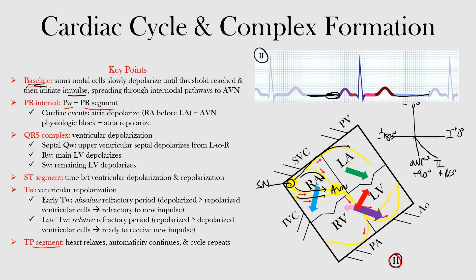Next, we come to the PR interval. Remember, the PR interval includes the P wave and the PR segment. The P wave represents atrial depolarization. The right atrium depolarizes before the left atrium because our sinus node is in the right atrium. The PR interval represents mostly AV nodal delay — a normal physiologic block that happens at the AV node. We also have atrial repolarization, which is usually not visible because it's sometimes buried within the QRS complex or just too minimal to see.